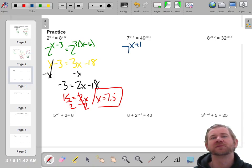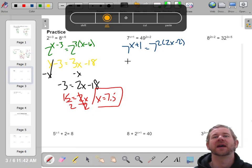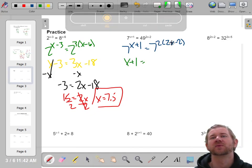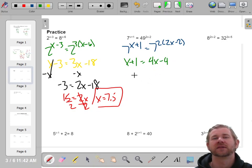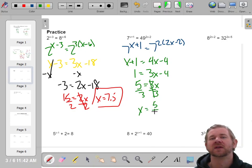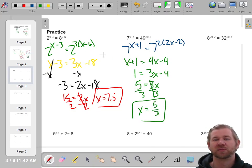7 to the x plus 1 equals 7 squared. 2x minus 2. So now I'll say x plus 1 equals, when I distribute, I get 4x minus 4. Subtract x. So 3x minus 4. Add 4. Divide by 3. I'm not spending a ton of time solving linear equations. You guys should be pros at this.